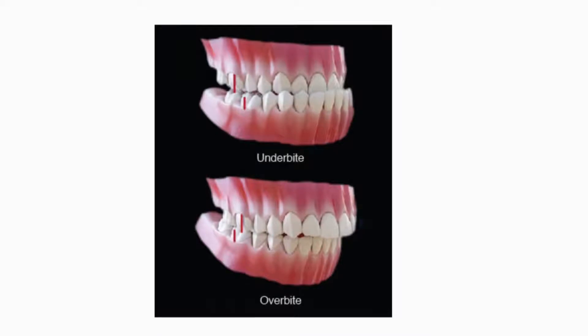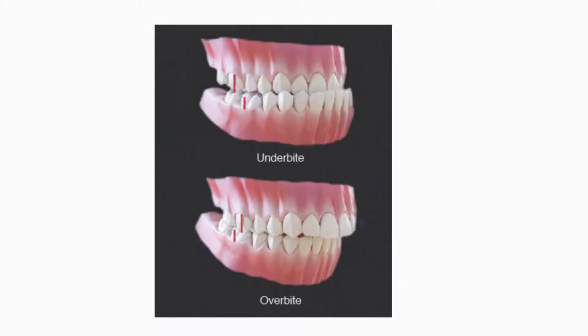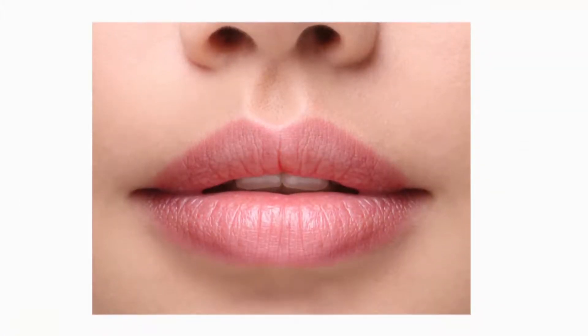The occlusion of the teeth is very important for us to understand the projection of the lips. If the upper lip is projected anteriorly, it could be because of an overbite in the teeth, and if it is less projected, it could be because of an underbite. The dental alignment has to be corrected if you want the right proportion.